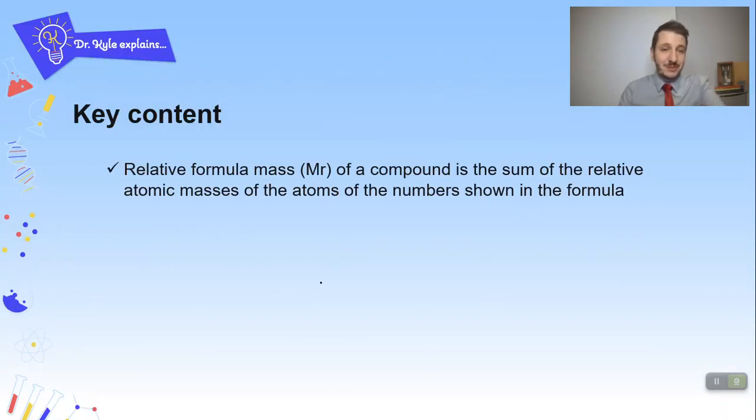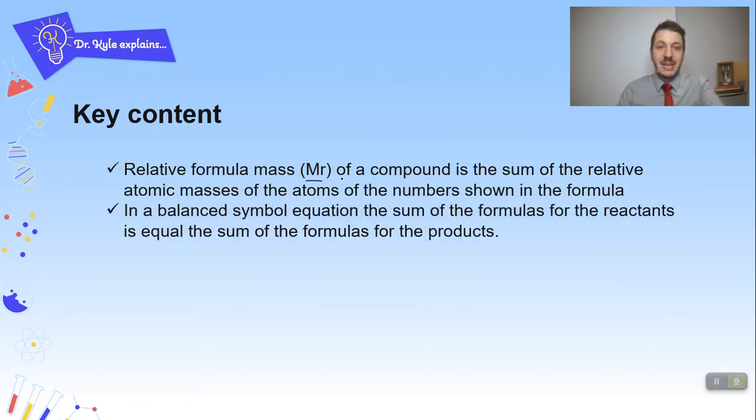Okay, so some key content first. The relative formula mass or the MR of a compound is the sum of the relative atomic masses of the atoms of the numbers shown in the formula. In a balanced symbol equation, the sum of the formulas for the reactants is equal to the sum of the formulas for the products.